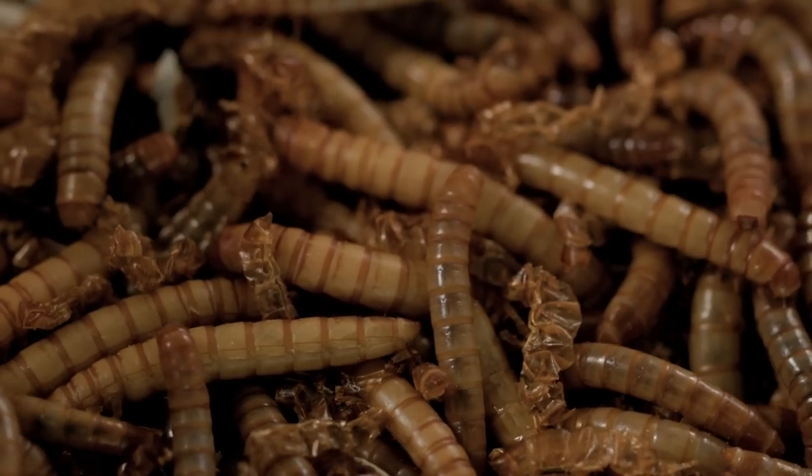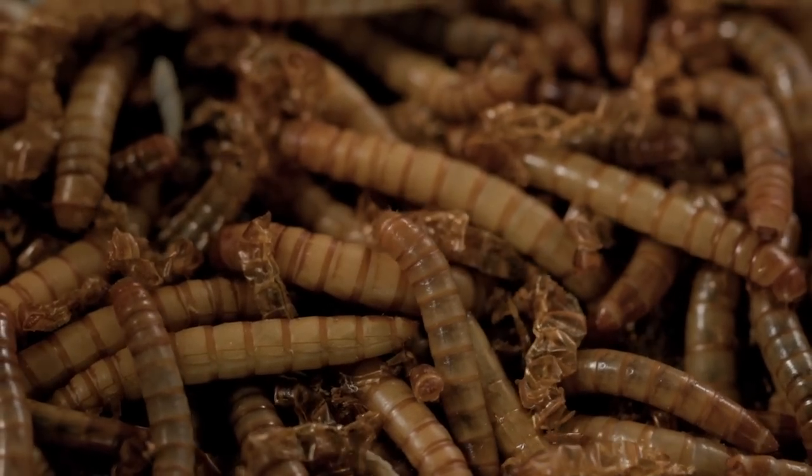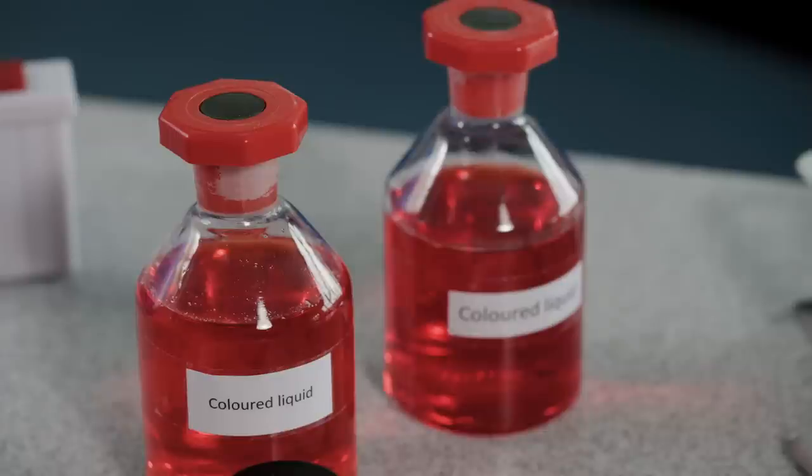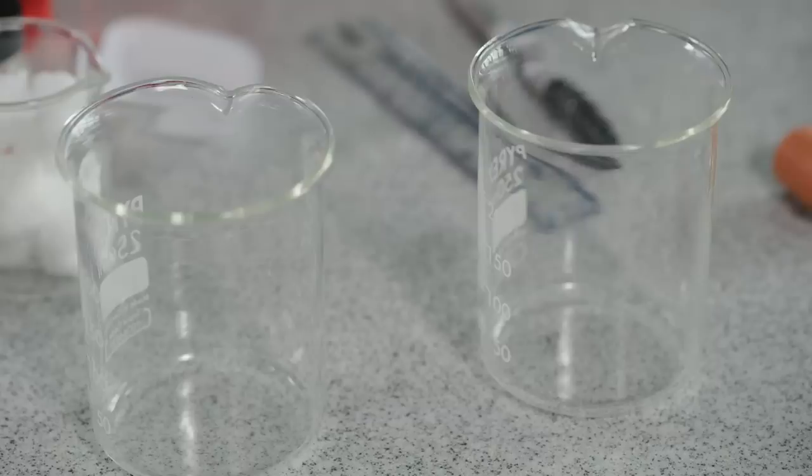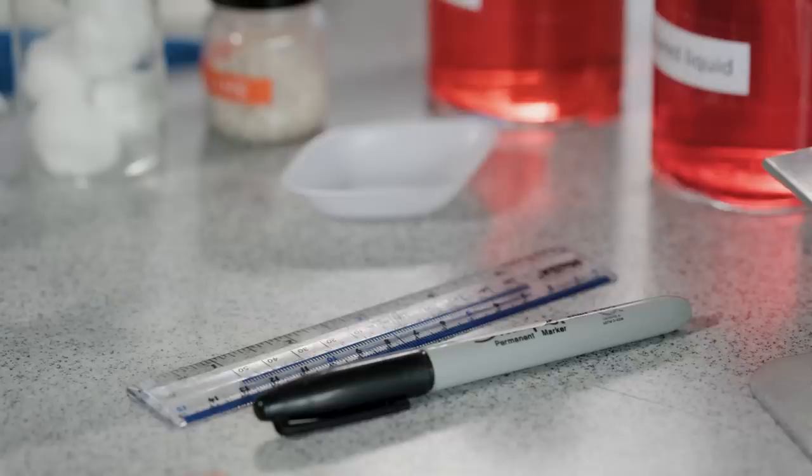Small organisms—we are using maggots—colored liquid, two beakers, forceps, millimeter scale ruler and a marker pen.